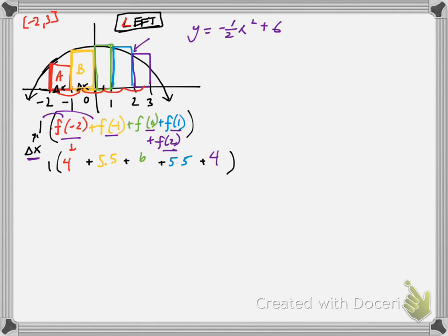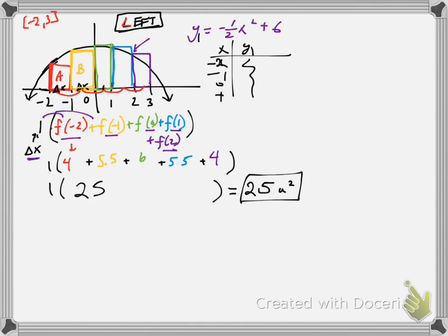So we're back. I filled in these values. I just plugged this function into my y1 in the calculator and looked at the table. It gave me all the y1 values. And if you add these all together, you will get 25. Those are all the heights added together times all the bases, which are all one, which will give you an approximation for the area to be 25 square units. There's your left-hand approximation.